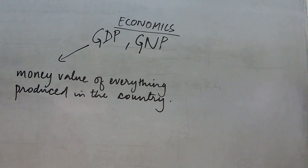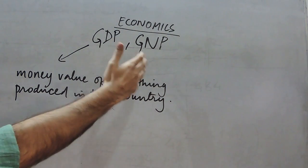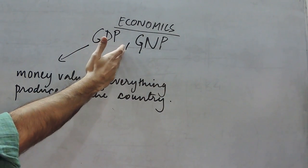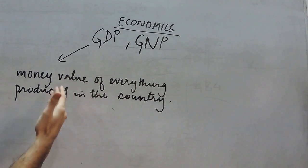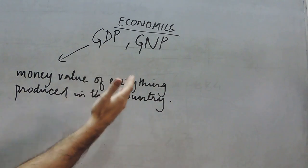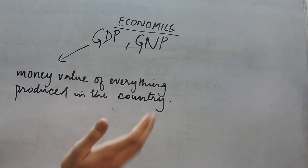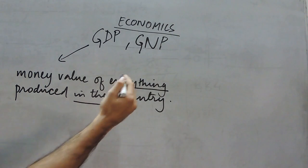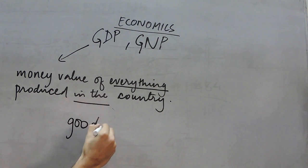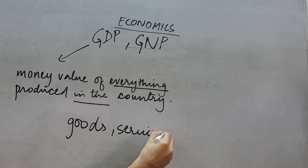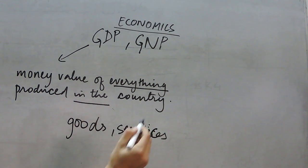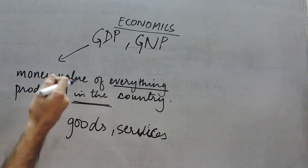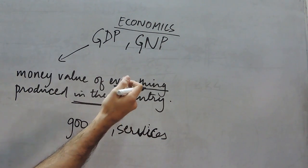By GDP we mean gross domestic product and by GNP gross national product. Gross domestic product can be explained as the money value of everything produced inside the country. The two key words are 'everything' and 'inside the country.' With 'everything' we mean both goods and services. With 'inside the country' we mean everything that is produced inside the territorial or geographical boundaries of the country, which is India.